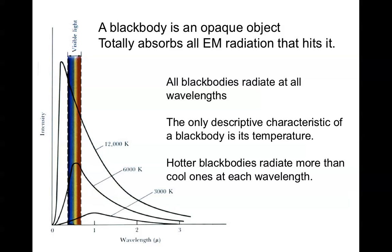A 3,000 degree black body, something that's characteristic of a cool star, radiates, as you see, less in the blue than it does in the red, which is why cool stars look red.